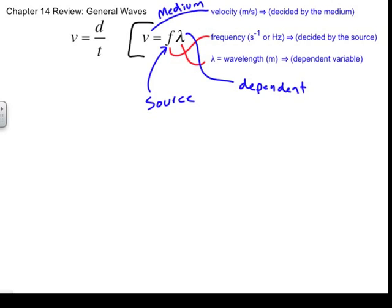Given that piece of information, that's why you would sometimes see this equation written as lambda equals velocity over frequency. Our book shows it that way. That's a reminder to us that the dependent variable is sitting over here, whereas the velocity is determined by the medium and the frequency is determined by the source.